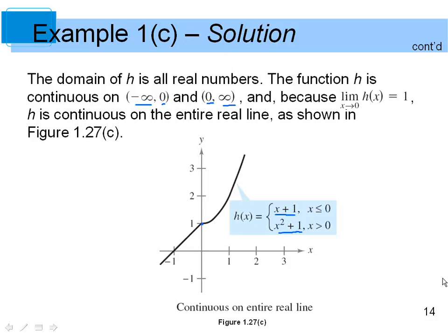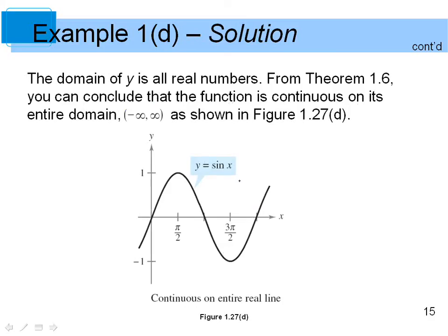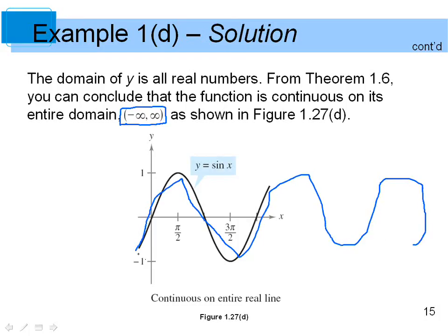Example four: f(x) = sin(x). Sine and cosine are periodic trig functions with no breaks. Every x value in both the positive and negative directions is part of the domain, so the domain is all real numbers from negative infinity to positive infinity. This function is continuous everywhere on the real line, continuing without interruption in both directions.